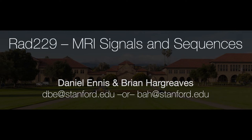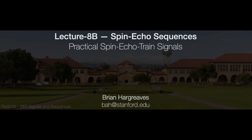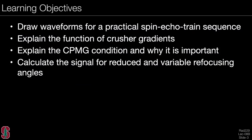This lecture is part of a series for RAD229 MRI Signals and Sequences offered in the Department of Radiology at Stanford University. The eighth lecture on spin echo sequences is divided into two parts. Lecture 8b covers practical spin echo chain signals. The learning objectives are to draw waveforms for a practical spin echo chain sequence, explain the function of crusher gradients, explain the CPMG condition and why it is important, and calculate the signal for reduced and variable refocusing angles.